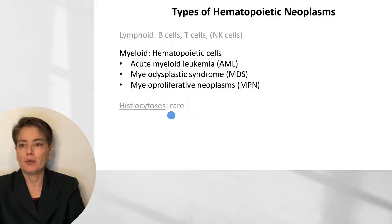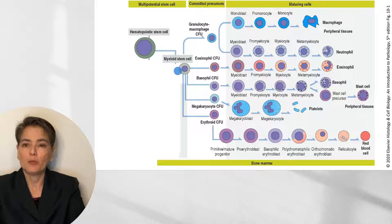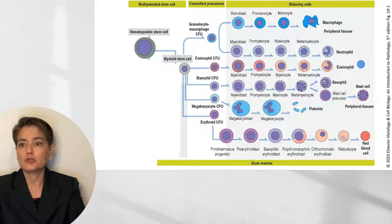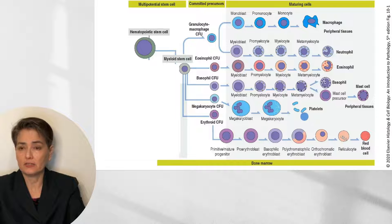AML classification is complicated because of the complex elements of hematopoiesis. We begin with our totipotent hematopoietic stem cell, which becomes a pluripotent myeloid stem cell that can differentiate along many lineages — through colony-forming units, myeloblasts, promyelocytes, myelocytes, metamyelocytes, and final products such as macrophages, neutrophils, and eosinophils. When you consider that transformation can occur in any of these cell types, you can see why diagnosis and classification is so complicated.